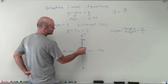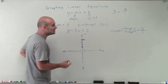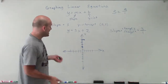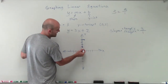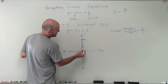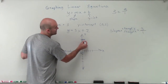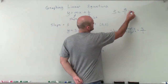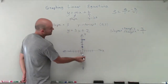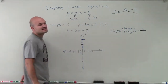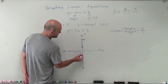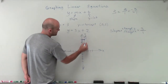That's my nice little slope triangle. Remember, we could also create a slope triangle going below — I could go down 3 and to the left 1, which is the same thing as negative 3 over negative 1. Because if I go down 3 and to the left 1, the negatives divide to a positive. So now I can connect my points.